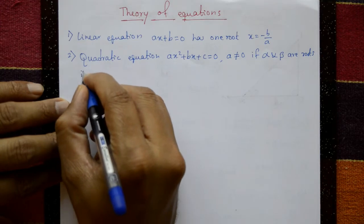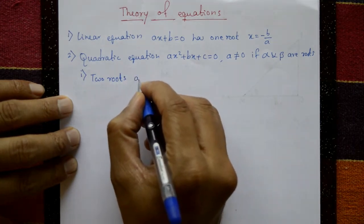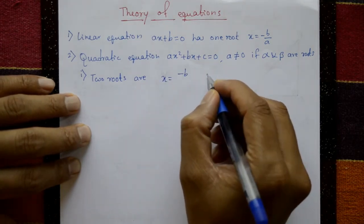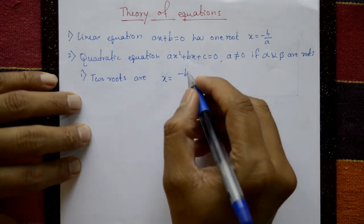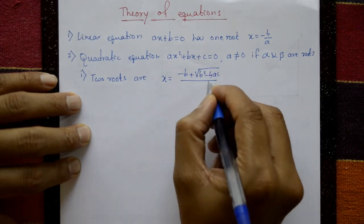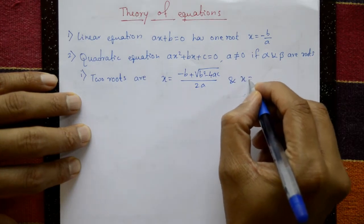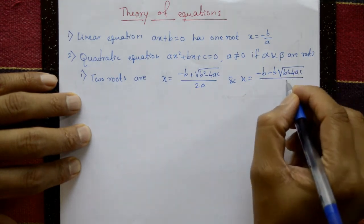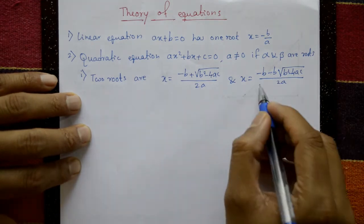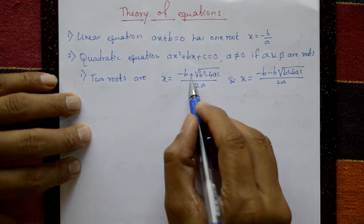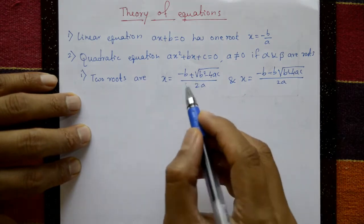The two roots are given by the quadratic formula. x equals minus b plus square root of b squared minus 4ac divided by 2a, and x equals minus b minus square root of b squared minus 4ac divided by 2a. So in total, x equals minus b plus or minus square root of b squared minus 4ac divided by 2a — one root is plus, one root is minus; only the sign changes.